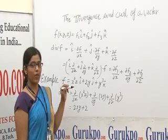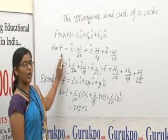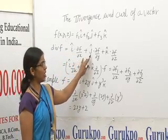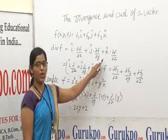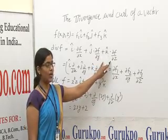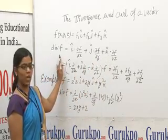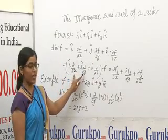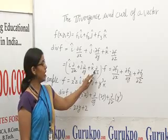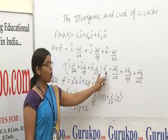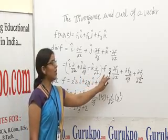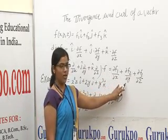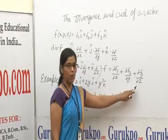Divergence of f is denoted as div f, and can be written as i-cap dot (∂f/∂x) plus j-cap dot (∂f/∂y) plus k-cap dot (∂f/∂z). It may also be written as ∂f1/∂x plus ∂f2/∂y plus ∂f3/∂z.